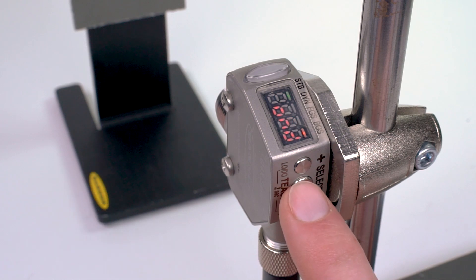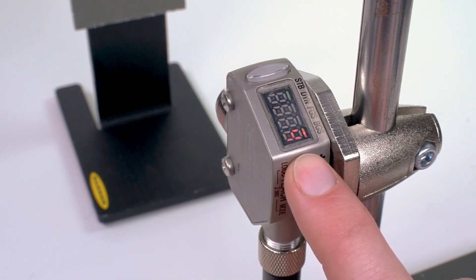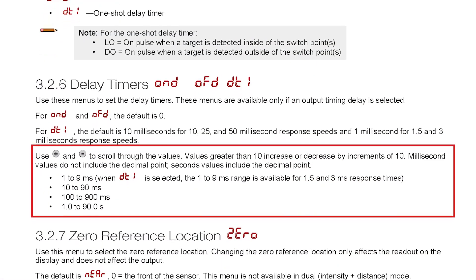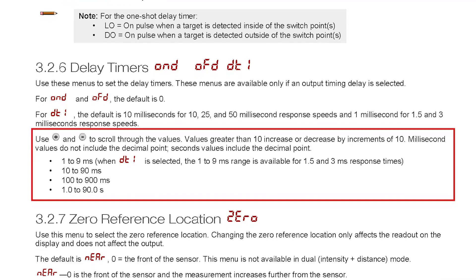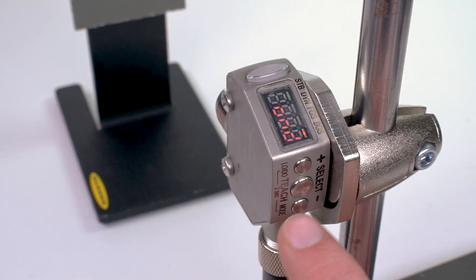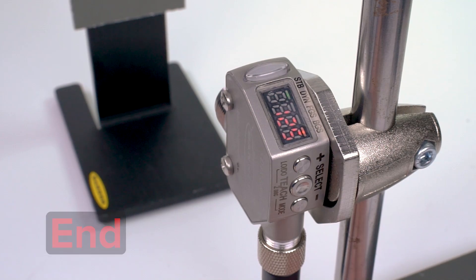Select OND for on-delay and use the plus and minus buttons to select the on-delay length. The delay length options are shown in the manual, with the shortest being one millisecond and the longest being 90 seconds. Press the select button to finalize the delay length, then scroll through the setup mode menu until you see END and press select one more time to return the sensor to run mode.